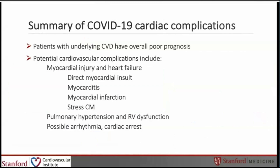In summary, the acute COVID-19 cardiac complications were as follows: patients with underlying cardiovascular disease had poor overall prognosis. Potential cardiovascular complications include myocarditis, myocardial injury, and heart failure due to direct myocardial insult, myocarditis, myocardial infarction, and stress cardiomyopathy. In addition, pulmonary hypertension and right ventricular dysfunction were seen, as well as possible arrhythmia and cardiac arrest.